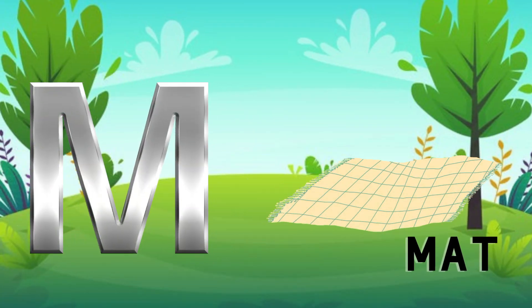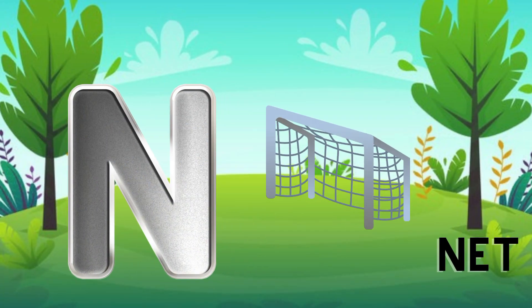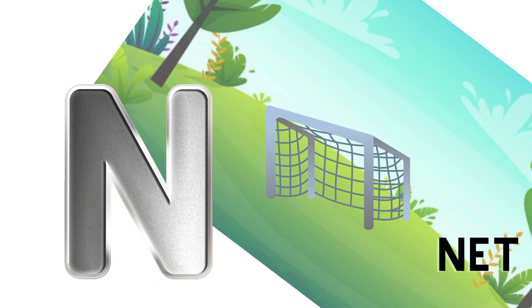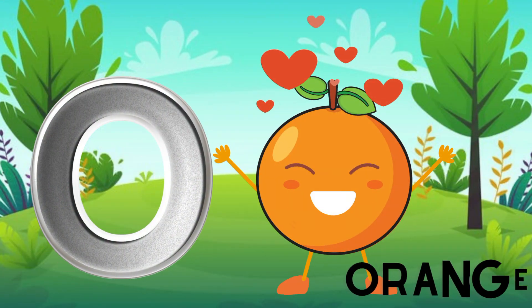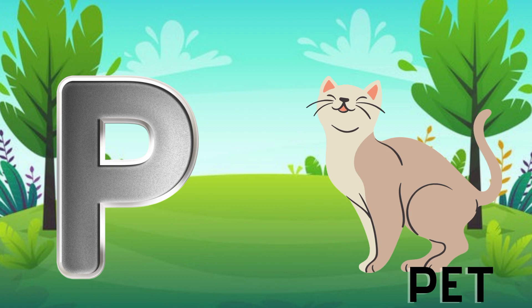M is for mat, m-m-mat. N is for net, n-n-net. O is for orange, o-o-orange. P is for pet, p-p-pet.